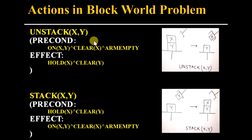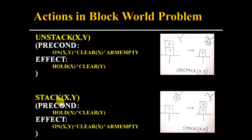For Unstack(x,y): the robot arm picks block x from y. The precondition is Clear(x), On(x,y), and Arm-empty. The effect is Holding(x) and Clear(y). For Stack(x,y): the precondition is Holding(x) and Clear(y). The effect is On(x,y), Clear(x), and Arm-empty.